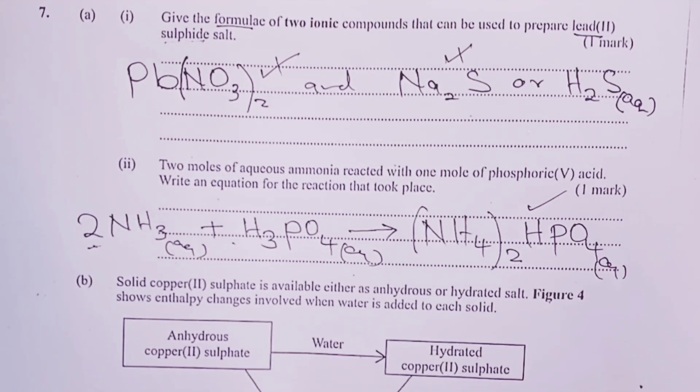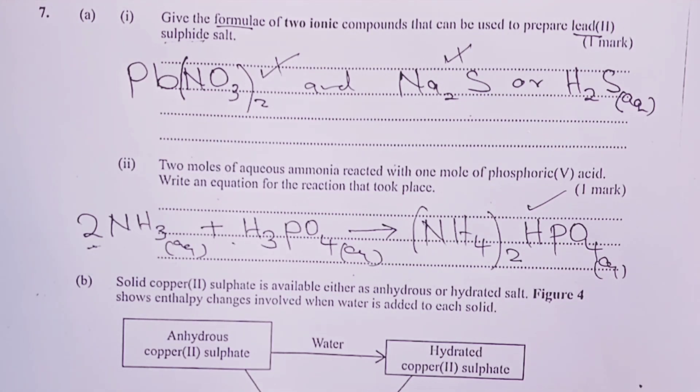So the equation is worth one mark. If a candidate went for ammonium phosphate, it would mean that we interfere with the moles given in the question through the idea of balancing. We proceed to part B.